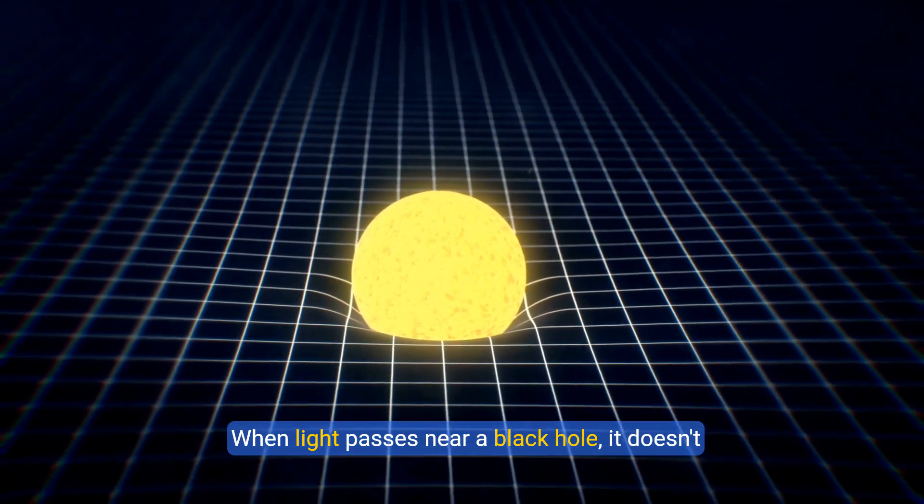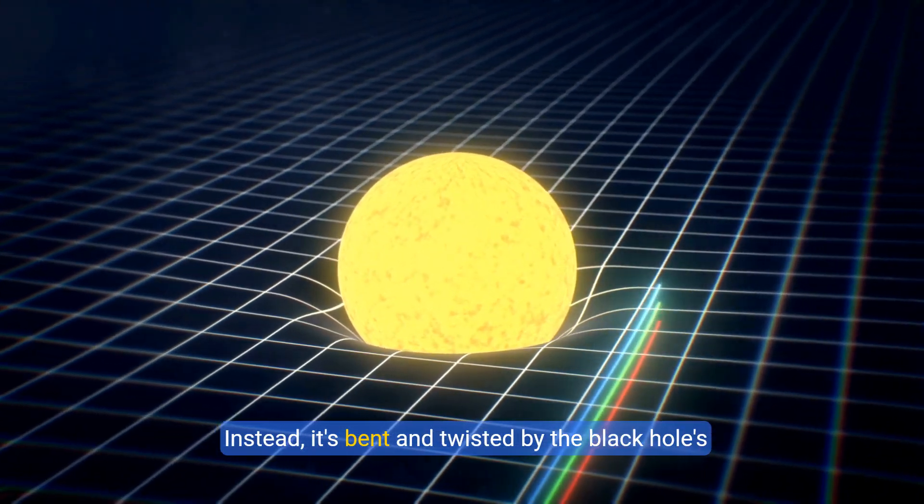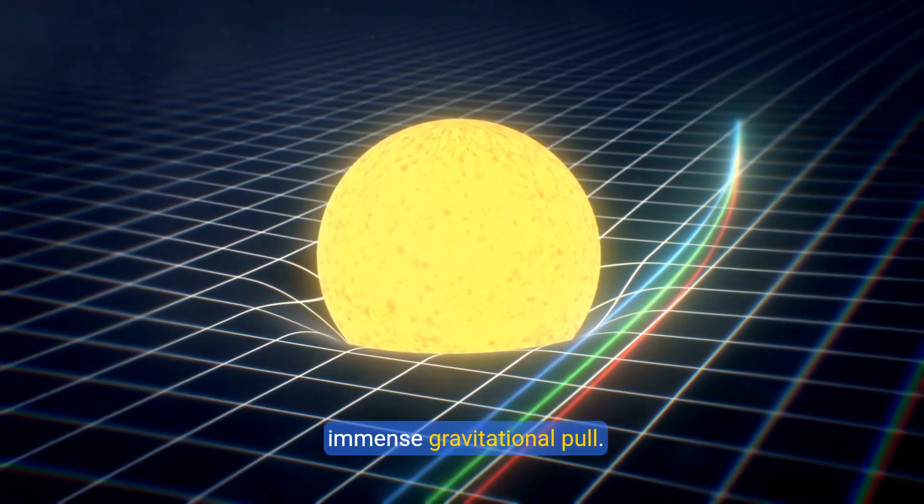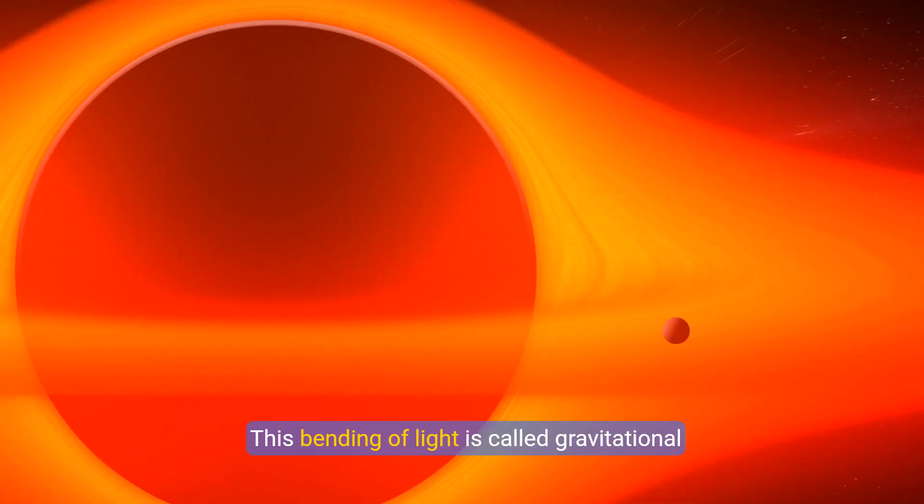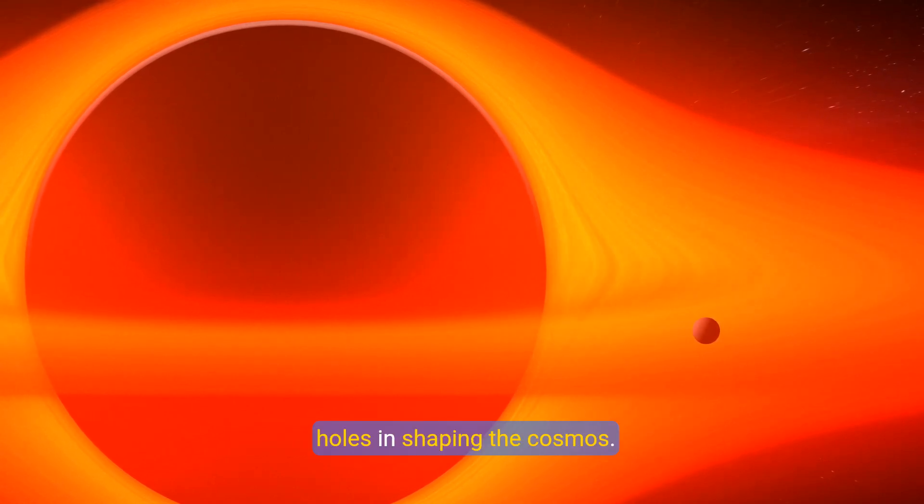When light passes near a black hole, it doesn't travel in a straight line. Instead, it's bent and twisted by the black hole's immense gravitational pull. This bending of light is called gravitational lensing, and it reveals the true power of black holes in shaping the cosmos.